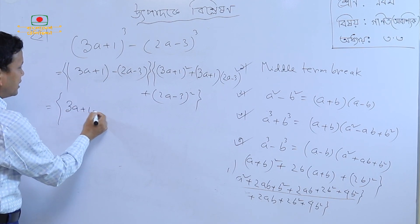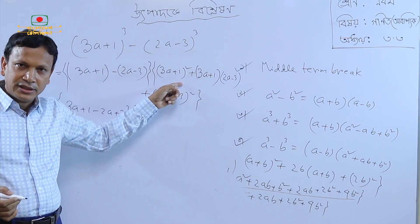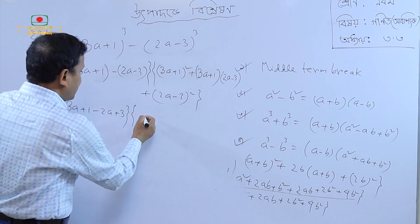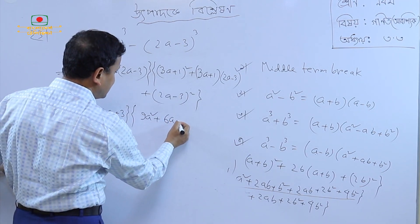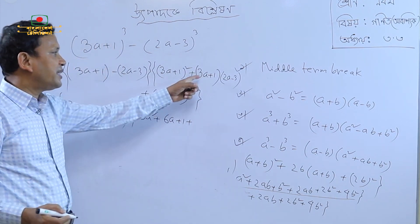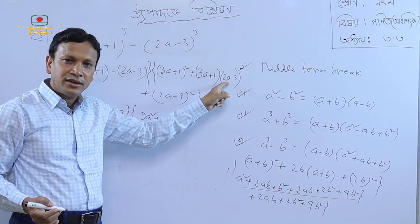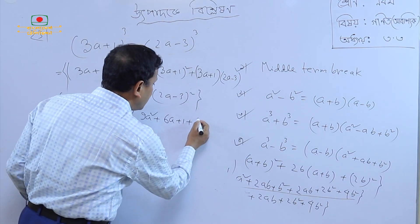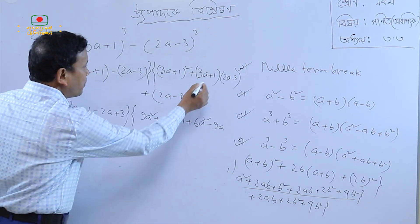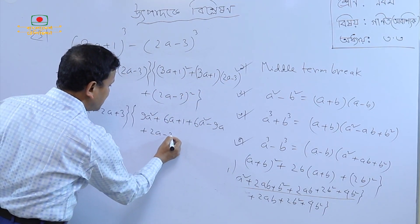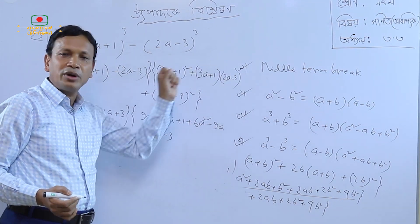3a plus 1, 2a plus 3. So eta plus eta is equal. What is equal to 3a plus 2a minus 3? Then 1 plus 2a minus 3. So, 6a² minus 9a plus 1 is equal to 2a minus 3. So, 6a² minus 9a and 1 is equal to 2a minus 3.